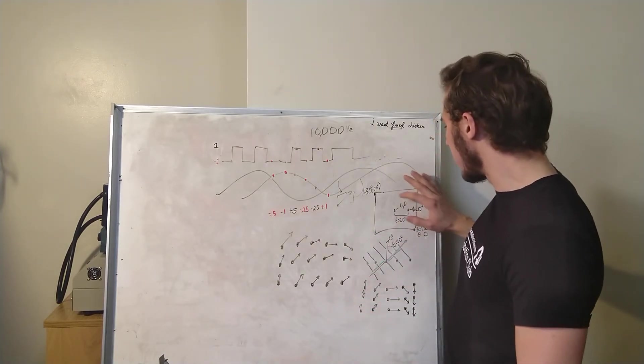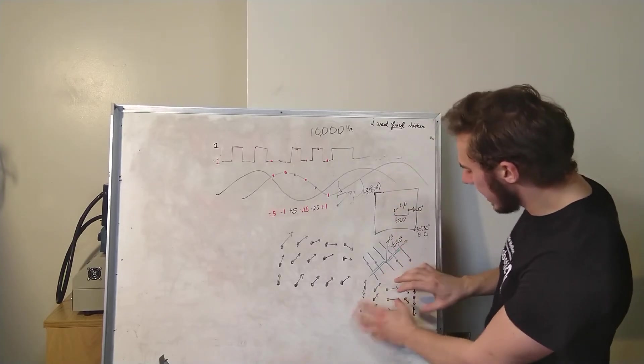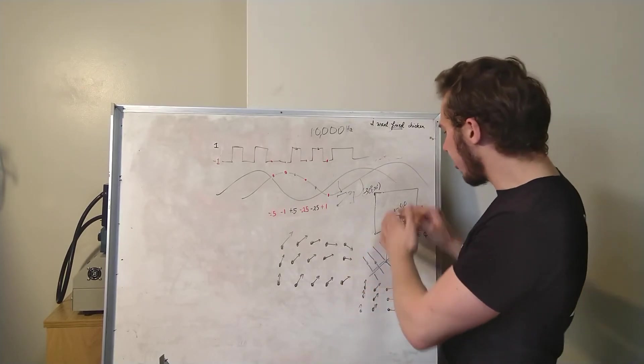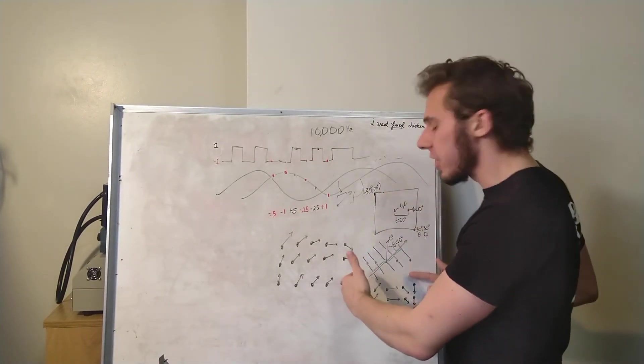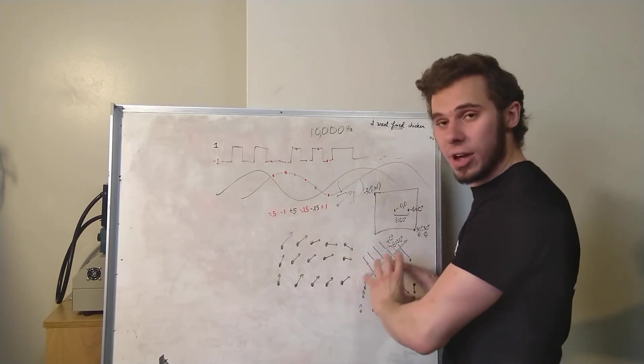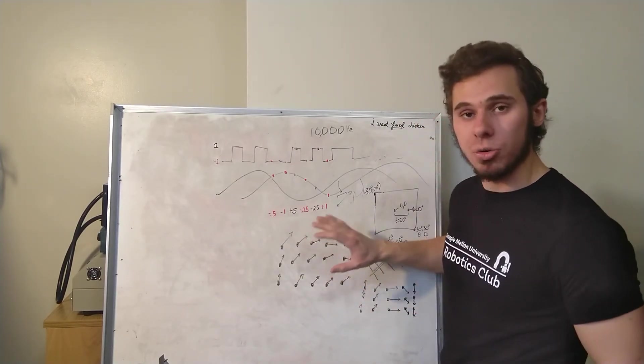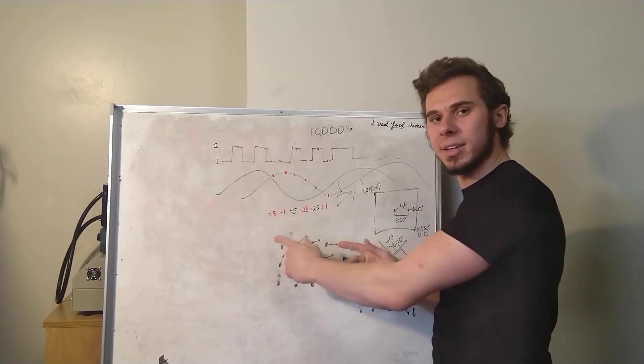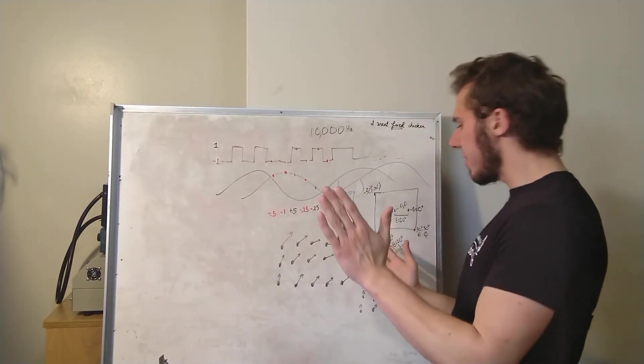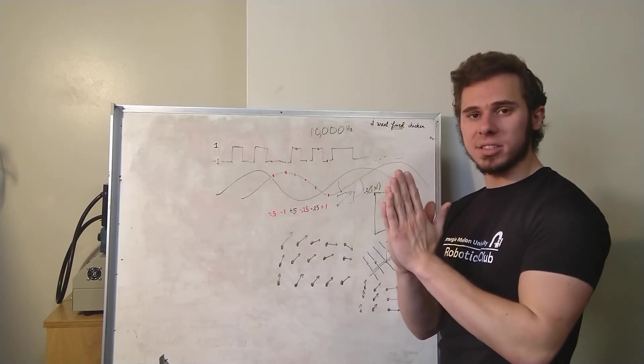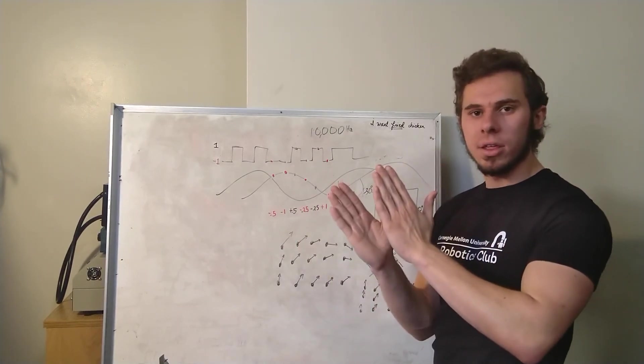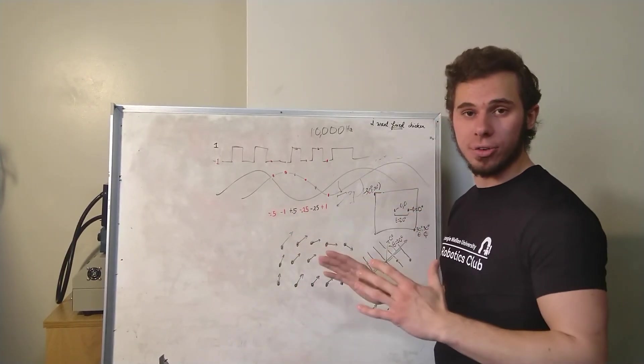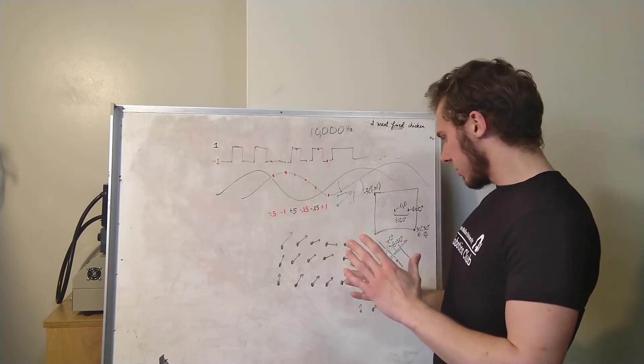So once we want to generate our image, we look at a specific pixel, we find its table of phases that we would expect if our source is actually coming from that direction, and we then multiply this set of complex numbers by our actual microphone data. And since this is what we would expect, and this is what we actually got, if the two line up, then since complex numbers, when added together, add their phases together, that should align the phases of every microphone in the array.